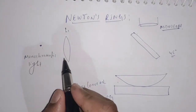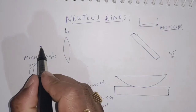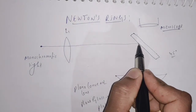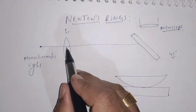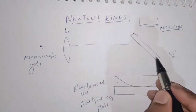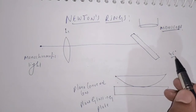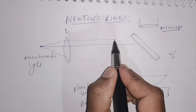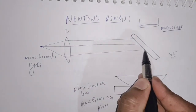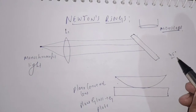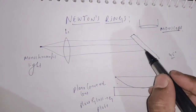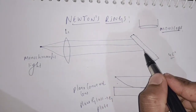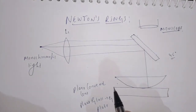From the monochromatic source of light, light is going to be incident on lens L1. And through lens L1, it is going to be incident on the plain glass plate which is kept at 45 degrees. These are the light waves which are incident on the glass plate placed at 45 degree angle, and these light waves are going to reflect. When they are incident on the plain glass plate, they then become incident on the plano-convex lens and glass plate assembly.